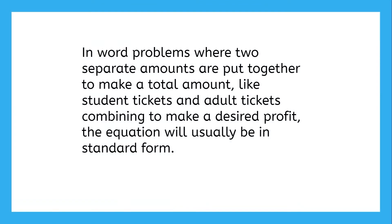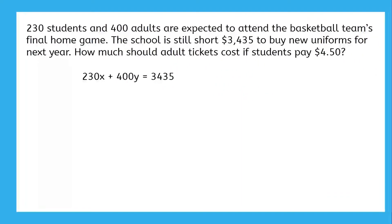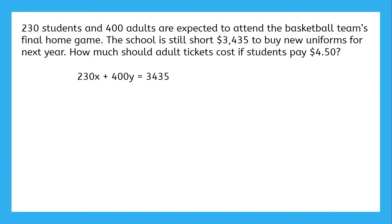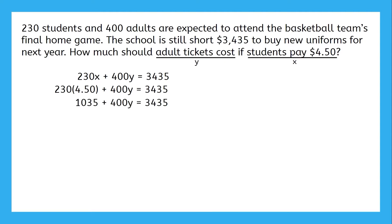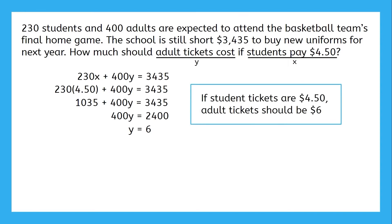So we've got our equation, which is in standard form. Quick rule of thumb: when a word problem has two amounts of different things adding to make a total amount — like this basketball ticket problem — the equation will usually be in standard form. Now, how much should adult tickets cost if students pay $4.50? In our equation, the cost of adult tickets is y and the cost of a student ticket is x. So we plug in 450 for x and solve for y: multiply 230 times 450, subtract that from both sides, and divide by 400. We get y equals six, so the cost of adult tickets should be six dollars.